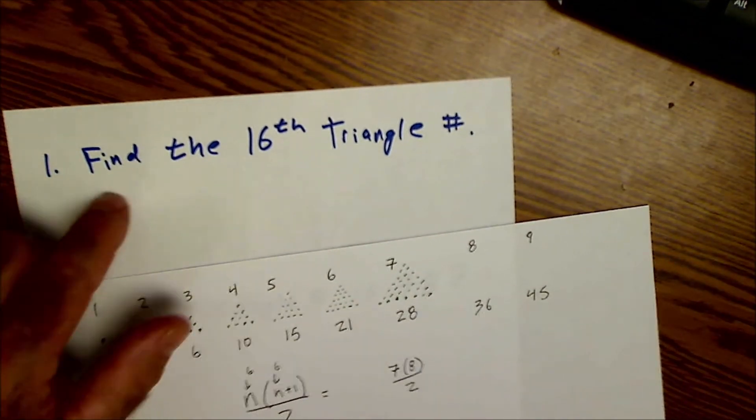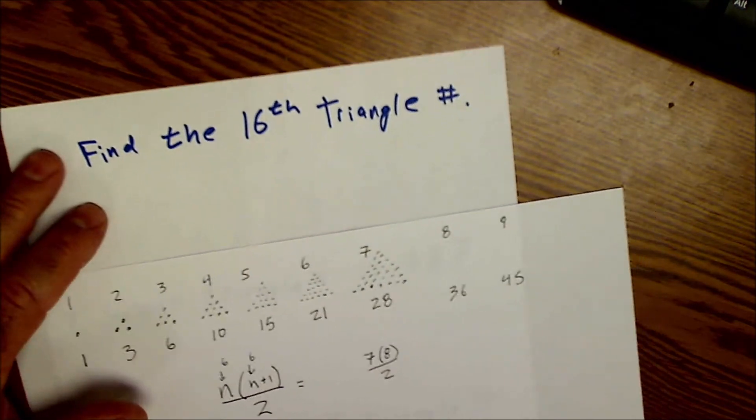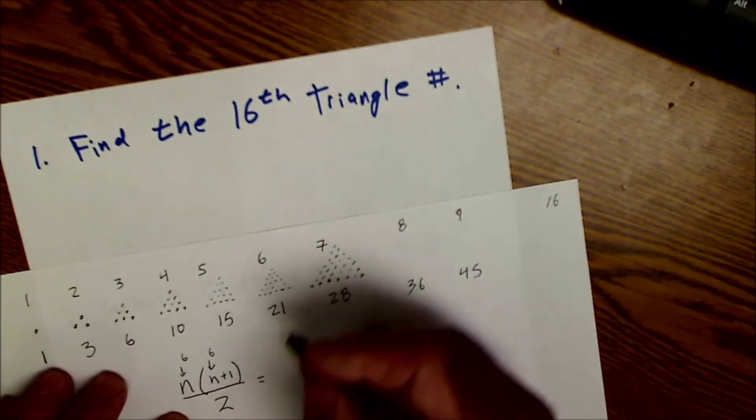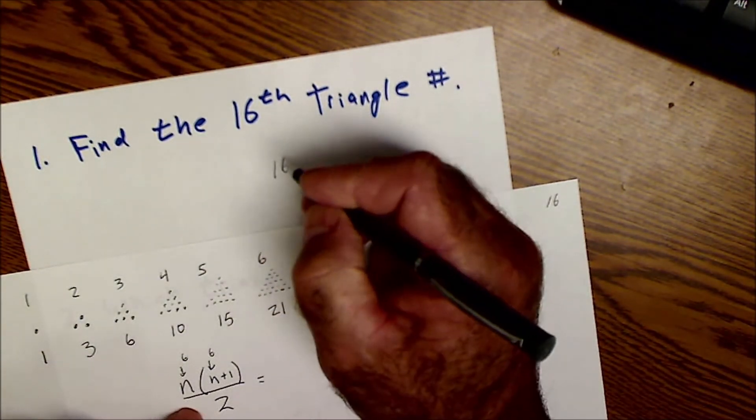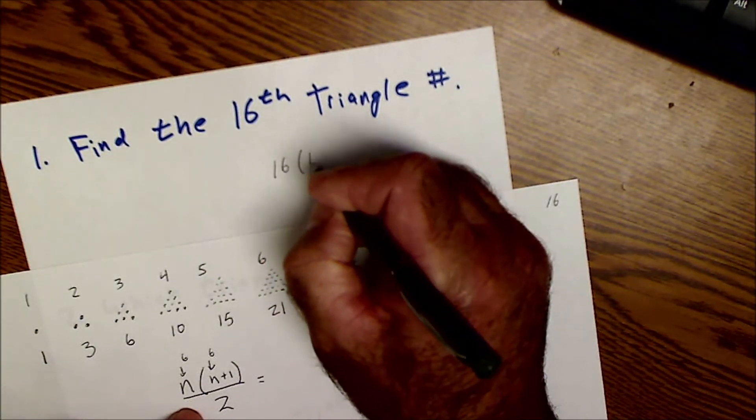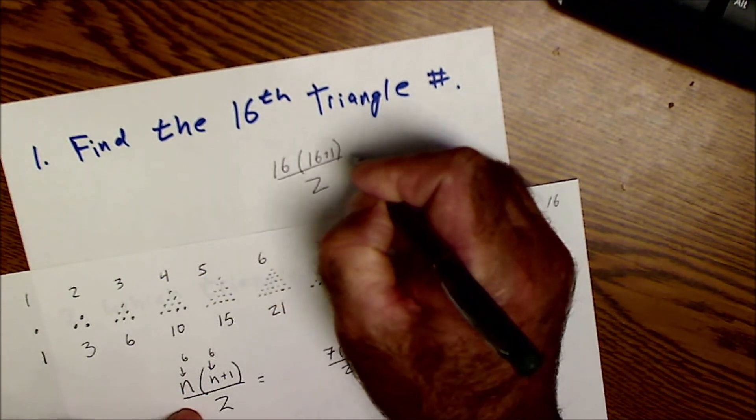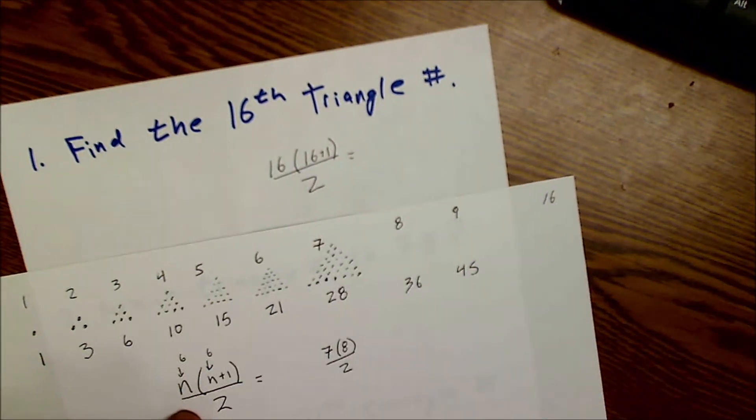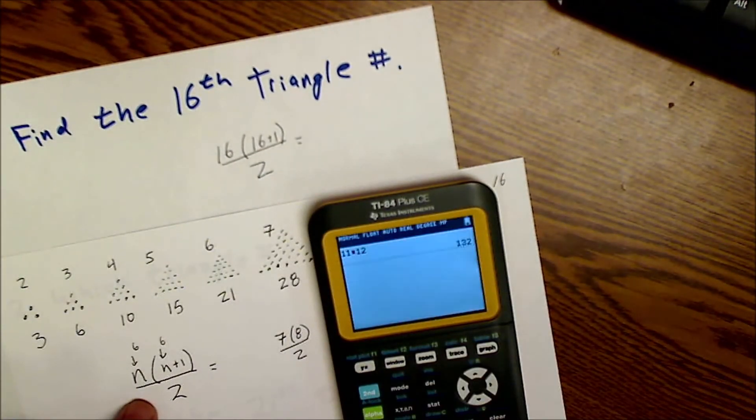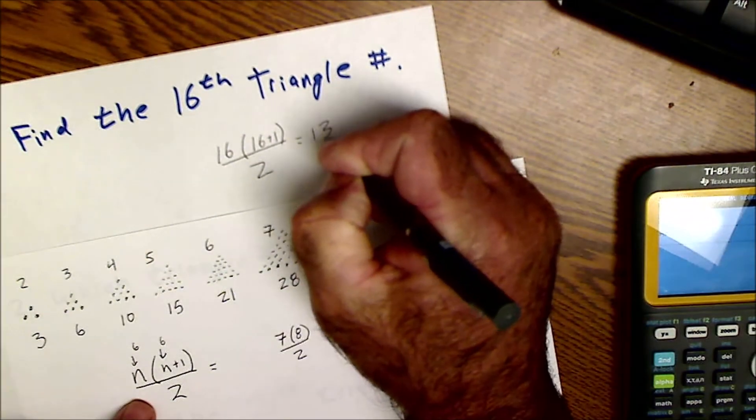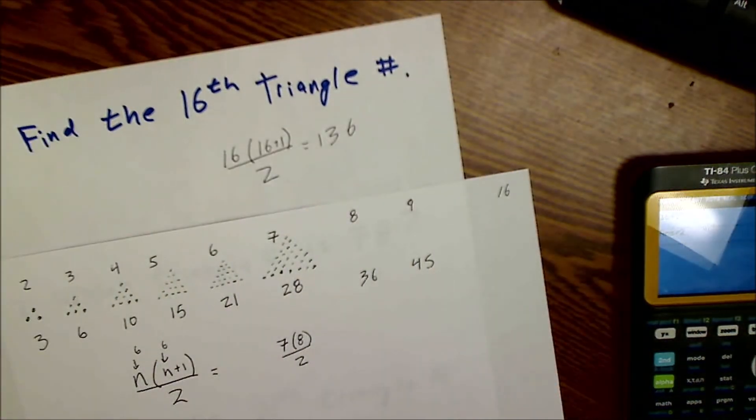Find the 16th triangle number. Well that's saying n up here is going to be 16. I'm just going to use my general equation and go 16 times 16 plus 1 divided by 2 and that's going to give us the value. So I'm going to go 16 times 17 divided by 2 and get 136. So the answer to this problem right here is 136.